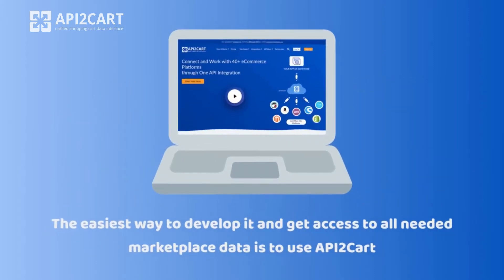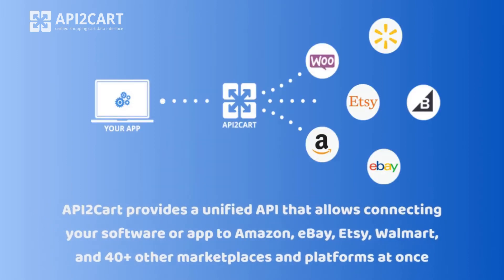The easiest way to develop it and get access to all needed marketplace data is to use API2Cart. API2Cart provides a unified API that allows connecting your software or app to Amazon, eBay, Etsy, Walmart, and 40-plus other marketplaces and platforms at once.